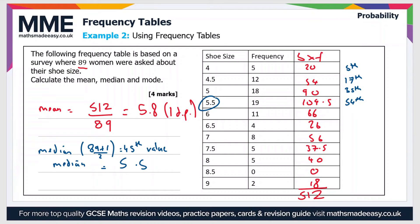The mode is the easiest of the three values to calculate, as it's the most commonly occurring value. We look for the one with the highest frequency. As you can see, the highest frequency is 19, and that's in the 5.5 shoe size. Therefore, the mode is also 5.5.